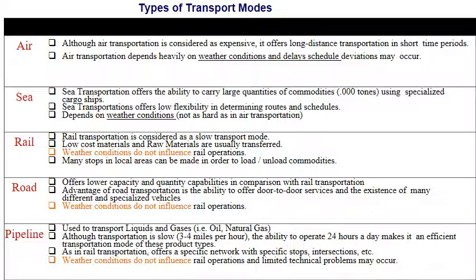Pipelines are used to transport specific types of products like liquids or gases — oil, natural gas — making them most suitable for petroleum companies. Pipelines work 24 hours a day and transport products slowly at about three to four miles per hour. They also offer a specific network of intersections between different types of lines.